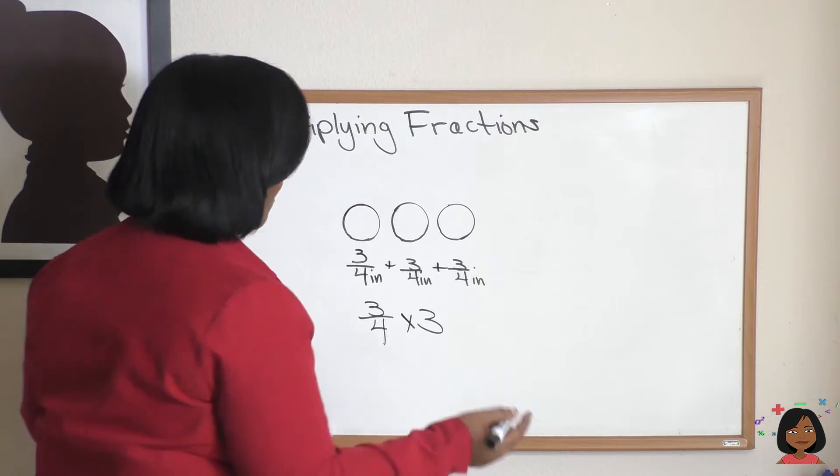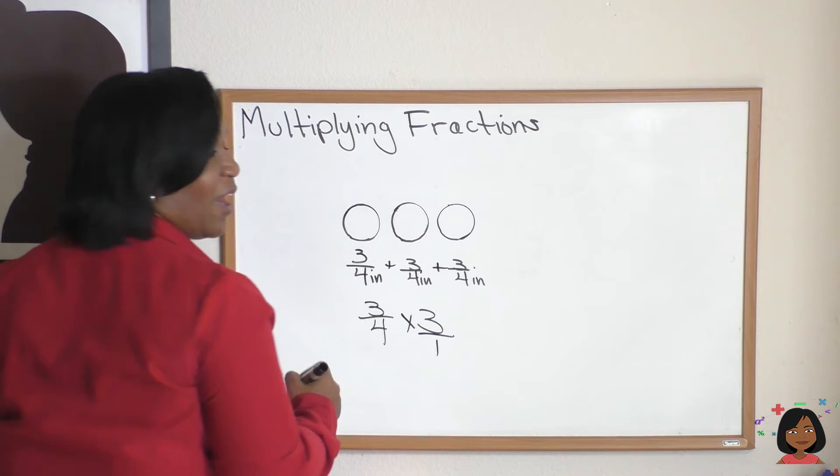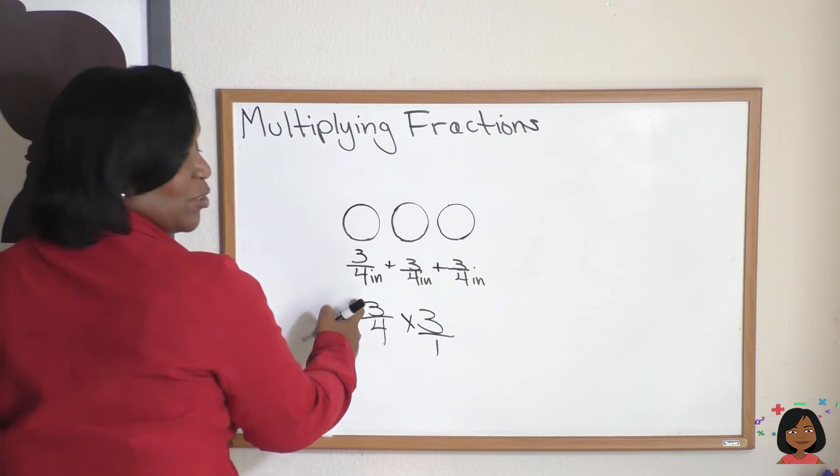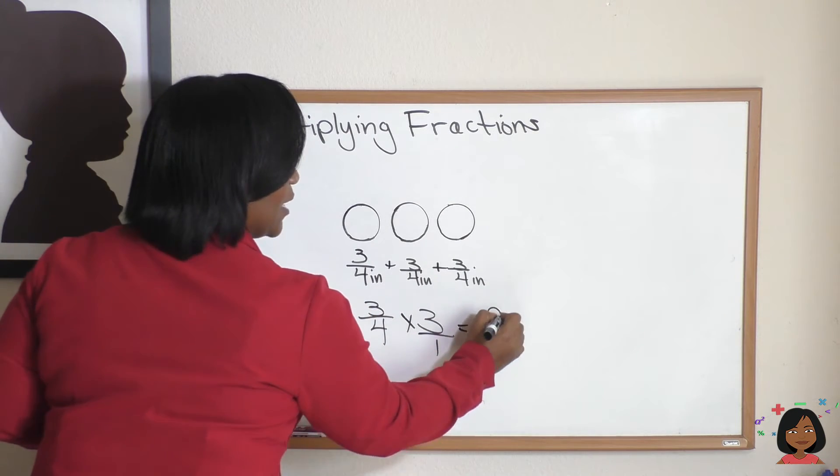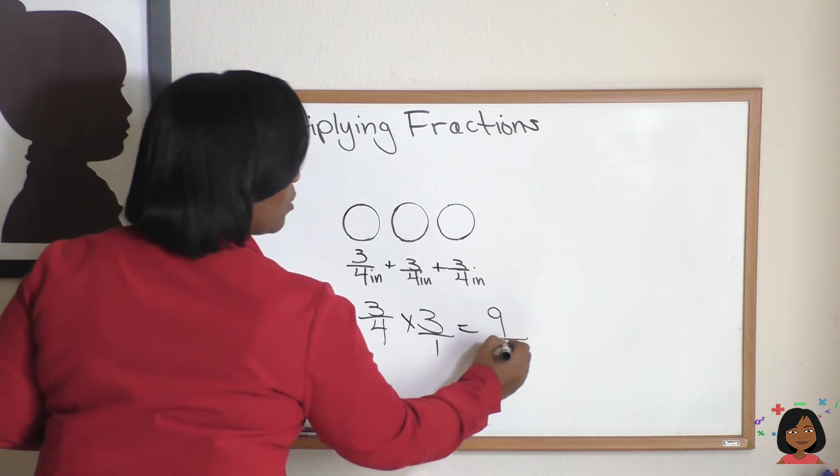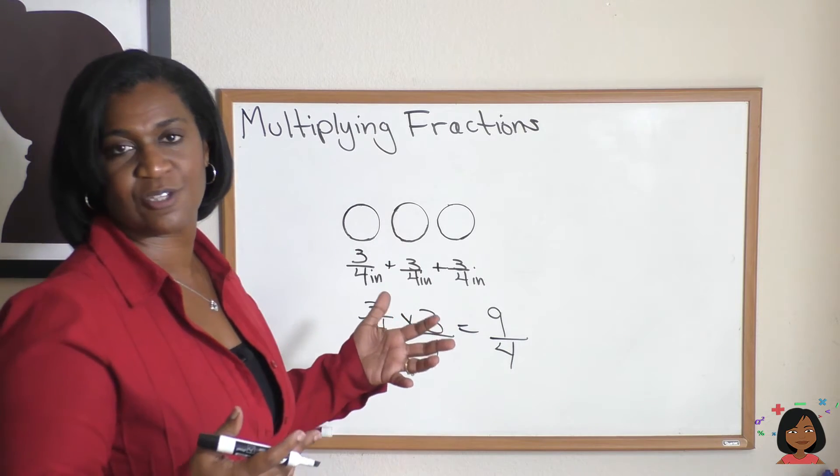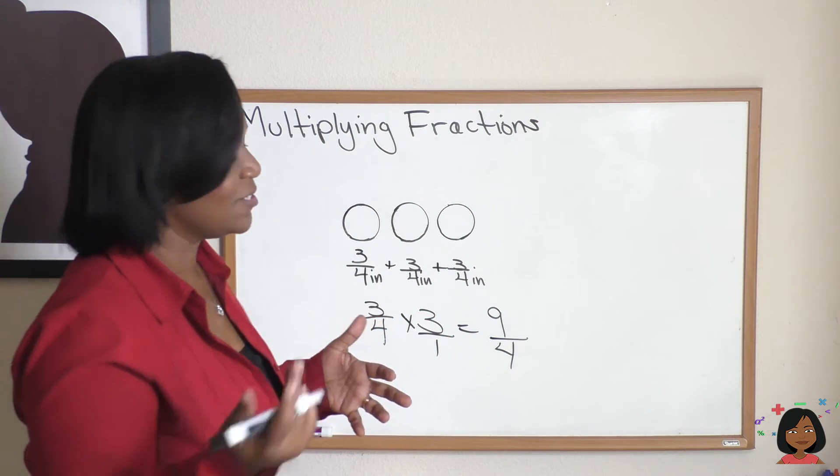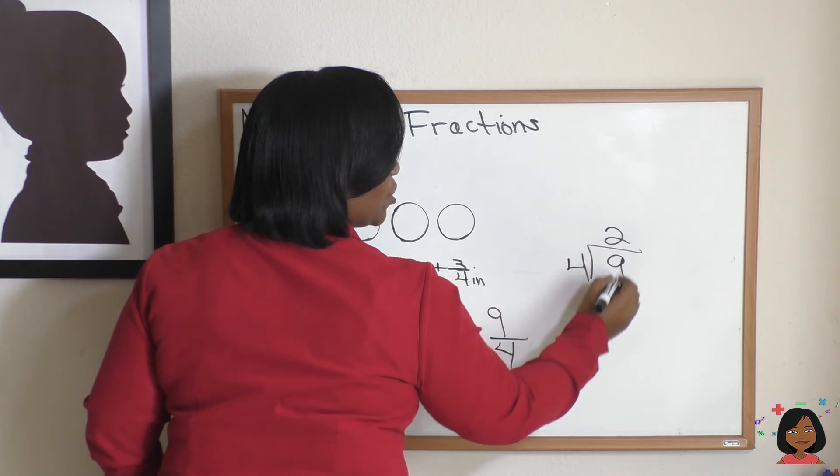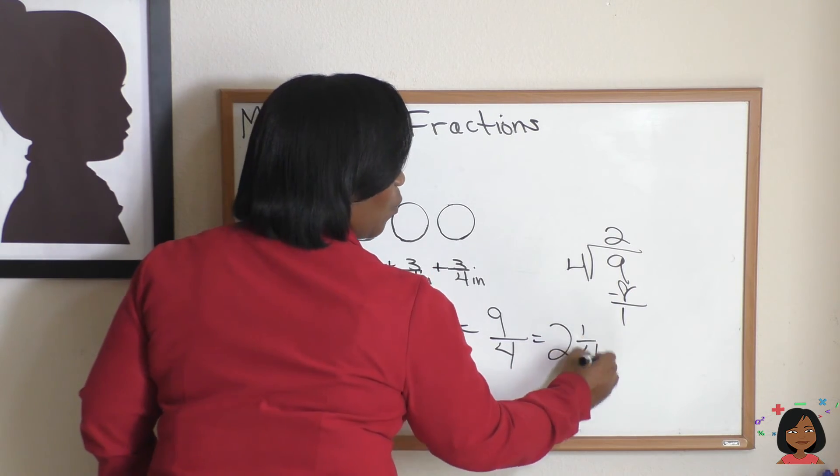Three fourths times three. Now if you need the help, feel free to put the one under the three. You don't have to do it though, but if you need it, it's okay. So do the numerators now. Three times three equals nine. And now do the denominators. Four times one equals four. And we know we're not going to keep it like that. We're going to change this into a mixed number, so we're going to go four into nine. And if we do the math, we have two with one left over. It equals two and one fourth.